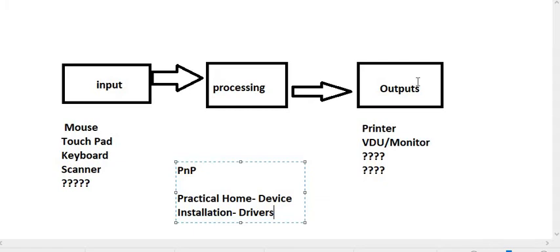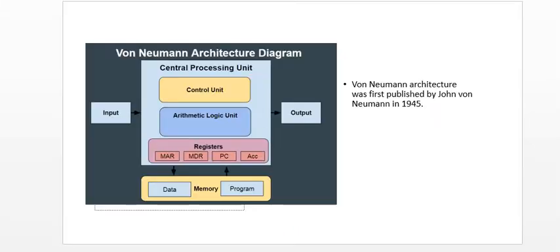Similarly, the mouth as an input device takes food as input, sends it to the stomach for processing, and it is converted to the relevant nutrients the body needs, then given out as outputs. Your brain will register that the stomach is full, and the relevant waste is passed outward. So the diagram of the computer system, thought of in that simpler form, is not very complicated — the CPU is the brains of the computer system.